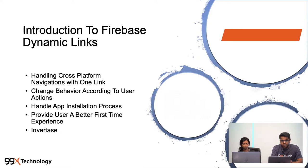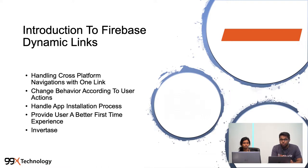The second advantage is changing behavior according to user actions. Imagine a user where the deep link is linked to a promo, a coupon, or an ad. If the user is coming from those kinds of links, we can customize as we want — we can control the look and feel of the application for those users.